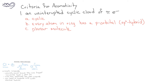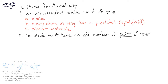In other words, every atom in the ring should be sp2 hybridized. Furthermore, the molecule should be a planar molecule. Second, the pi cloud must have an odd number of pairs of pi electrons.